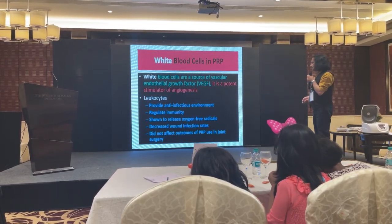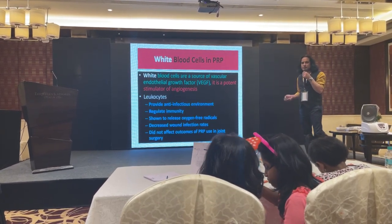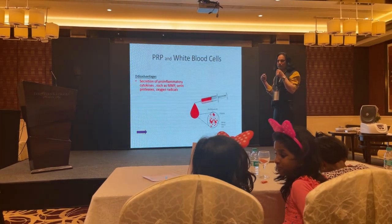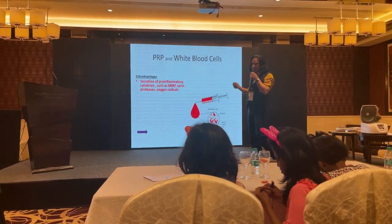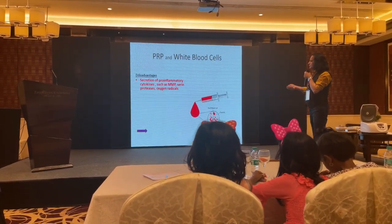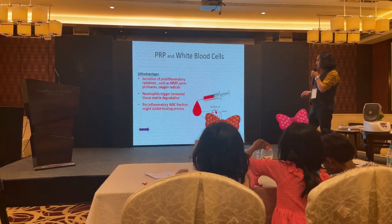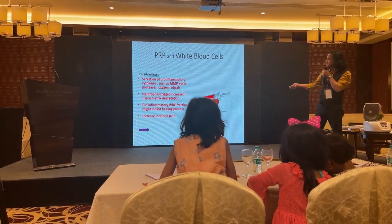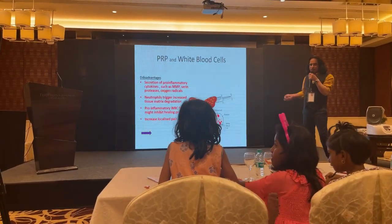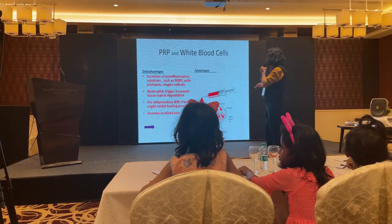In a small amount, white blood cells do not significantly affect the role of PRP. However, if you have maximum contamination of white blood cells, there may be secretion of pro-inflammatory cytokines such as MMPs, reactive oxygen species, and neutrophils that trigger increased tissue matrix degradation. An adequate percentage of white blood cells is therefore important.